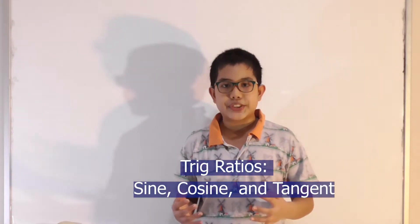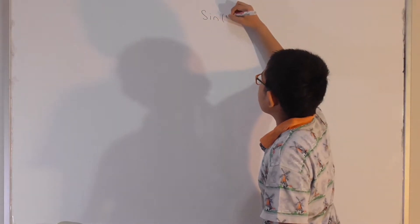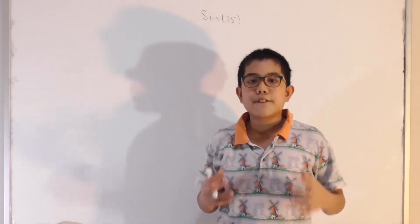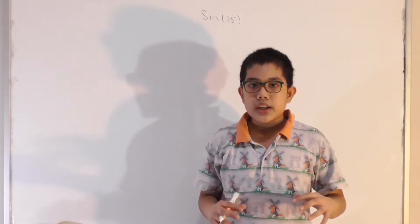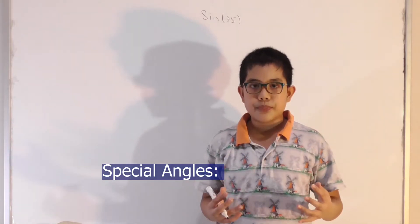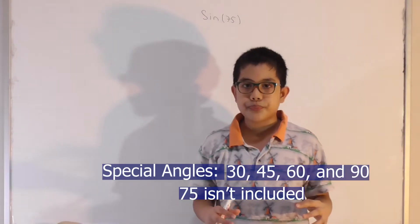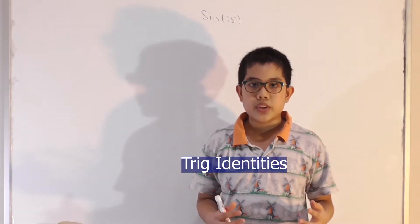In my previous videos I've shown you everything about the trig ratios — sine, cosine, and tangent — and we know they are very useful. But what if you're given a question like finding sine of 75 degrees without any calculator? At first you might think this is impossible, because the only way to figure out trig ratios without a calculator is if you're dealing with special angles: 30, 45, 60, and 90. And 75 is not one of them, so we're going to need to use trig identities.